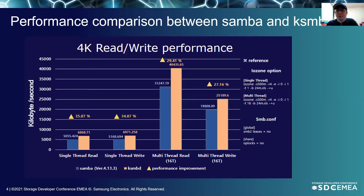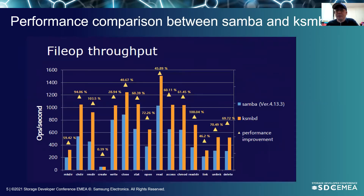This is newly measured performance comparison data between the current latest KSMD and latest Samba. This is the result of 4K read-write performance between Samba and KSMD measured using IO zone. WhoopilLock was disabled to remove cache-hit performance. Single-thread test results show almost 30% performance difference in read-write performance and almost 20% performance difference in multithread. File-opi is a benchmark that measures how many file operations can be performed per second. The comparison of Samba and KSMD performance shows a difference greater than IO zone.